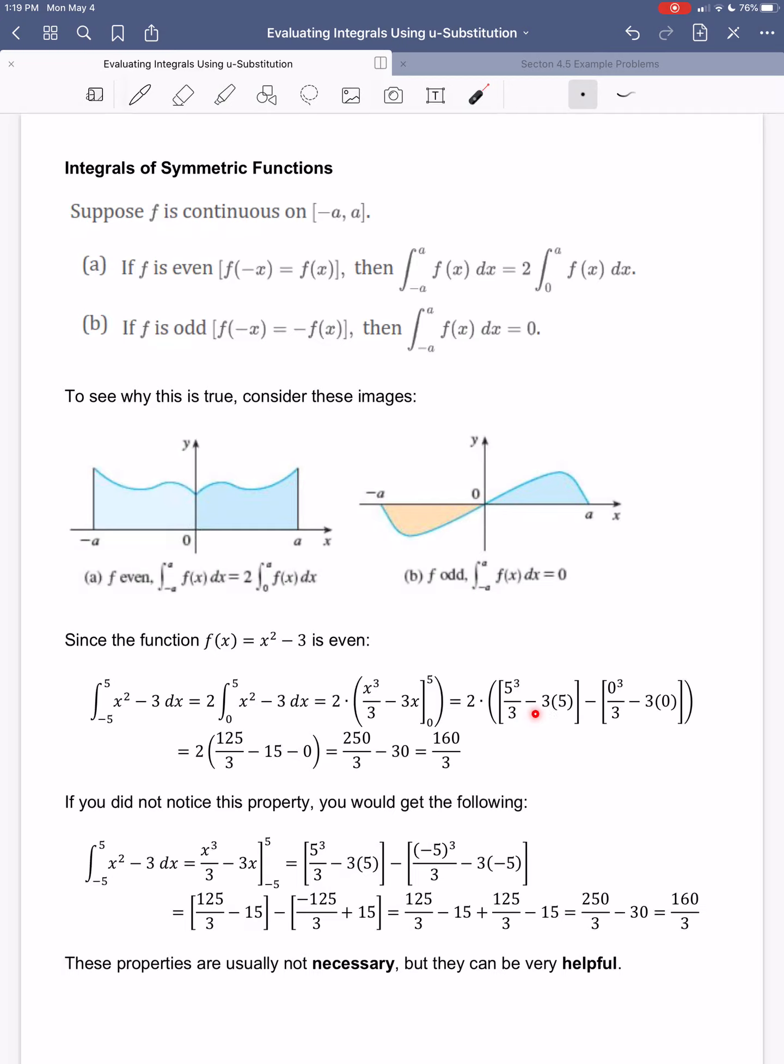When I plug in the 5, I get this. When I plug in the 0, that's all just a big 0. So I get 125 over 3 minus 15 minus 0. 2 times 125 is 250 over 3. 2 times 15 is 30. 30 over 1 is really 90 over 3. So I could switch the denominator and I get 160 over 3.